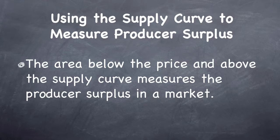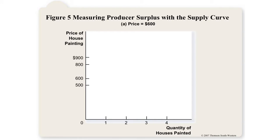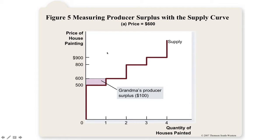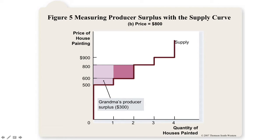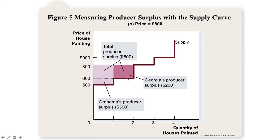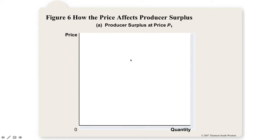Producer surplus is the area below the price and above the supply curve, because the supply curve represents a producer's cost of production. If the price is $600, Grandma's producer surplus is $600 minus her $500 cost, giving her $100. If the price rises to $800, Grandma's surplus increases to $300, and a new seller enters the market as well, for a total producer surplus of $500.